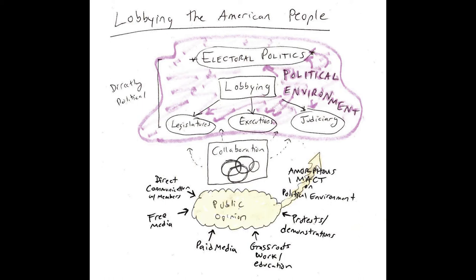Many large interest groups have a legislative scorecard where every legislator in the country — every member of Congress and every member of every state legislature — is scored based on that group's metrics. For example, the NRA scores on gun rights, the NAACP scores on support for minority rights, the ACLU scores on support for civil liberties. They send out those scores, and often also score potential challengers running for positions. A legislative scorecard is a relatively inexpensive way of communicating directly and influencing public opinion about particular officeholders, which then has a direct impact on electoral politics. The larger your membership, the more your legislative scorecard is going to have an impact on that particular election.